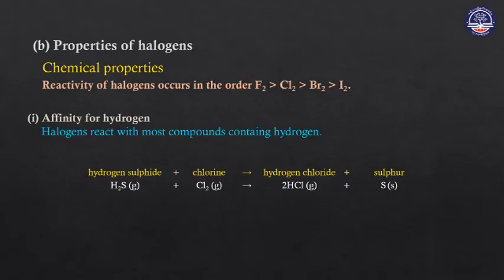The chemical properties — this is what I want to say about fluorine. Fluorine, chlorine, bromine, and iodine are the halogens we will discuss.